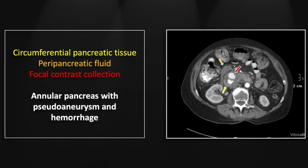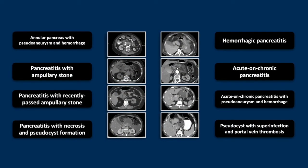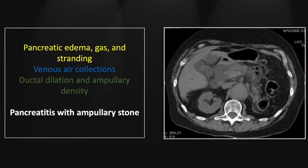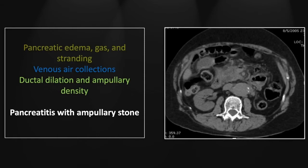So that is an annular pancreas. Our next case is an extensive emphysematous pancreatitis due to an ampullary stone. There is quite a bit of peripancreatic fluid here adjacent to the head of the pancreas, and in addition there is extensive stranding surrounding the body and tail, as well as intraparenchymal gas which extends out into the adjacent mesenteric veins as you see here.